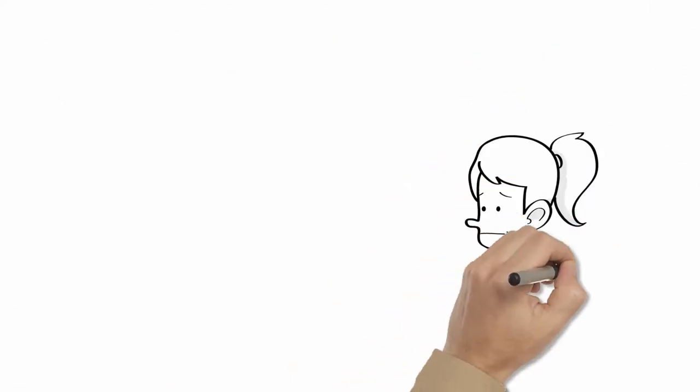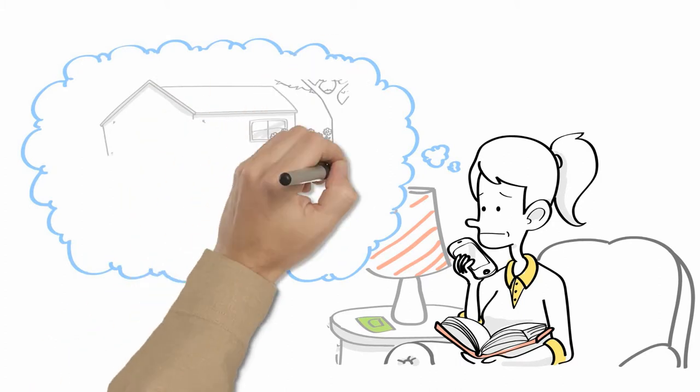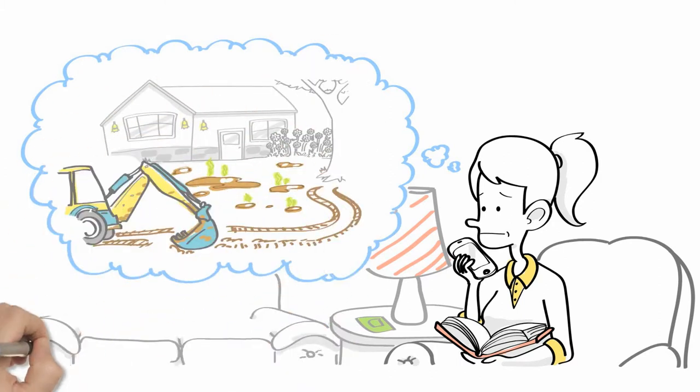Carrie had a couple of choices. She could call the roto-rooter folks, but that would just be a temporary fix. More than likely she'd have to call them again in the near future.